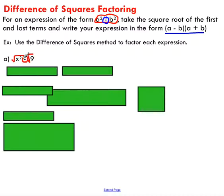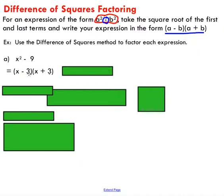Alright, so let's break this thing down into two binomials using the difference of squares factoring method. There's not too much work involved. All we're going to do is take the square root of the first term, the square root of the last term, and write it in this form. The important thing is to make sure you've got a subtraction and an addition sign. The order in which you write these binomials does not matter, so I could have x plus 3 first, x minus 3 after — it does not make a difference. And that's it for the first example.